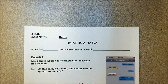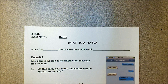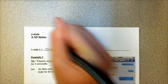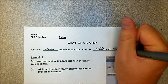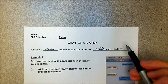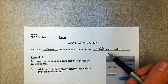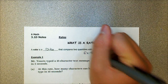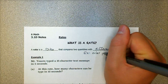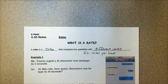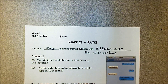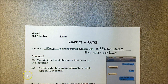In the last lesson we talked about what it means to be a ratio. In this video we're going to talk about what is a rate. A rate is a ratio that compares two quantities with different units. One very common example of a rate is miles per hour. If a car was traveling at 35 miles per hour, I'm comparing 35 miles per one hour, and those two quantities have different units.